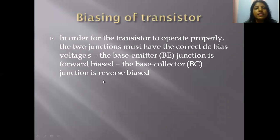Biasing of the transistor: In order for the transistor to operate properly, we must bias the transistor correctly. The two junctions must have the correct DC bias voltages. The base-emitter BE junction is forward biased and the base-collector BC junction is reverse biased.